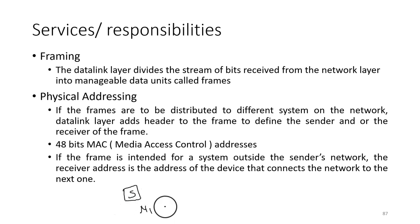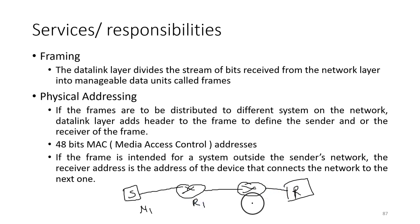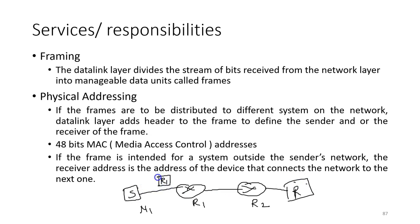For example, there is a sender in one network and a receiver in another network, and these two networks are connected by two intermediate nodes R1 and R2. So while sending data from the source to the receiver, the physical address of the receiver will be the physical address of the next node that connects to the network of the receiver.